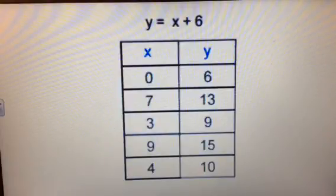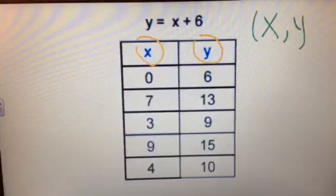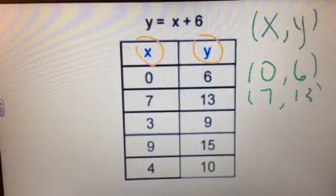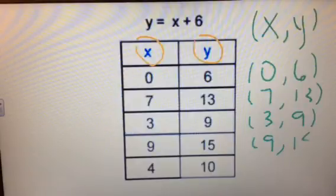Here is the first table of values that we made together. Notice that it has the x values and the y values. When we write our coordinates, it's always x comma y with brackets around it. So these coordinates are equal to 0 on the x, 6 on the y, 7 on the x, 13 on the y, 3 on the x, 9 on the y. This one is a value of 9 on the x-axis and 15 on the y-axis. And then lastly, we have 4 and 10.